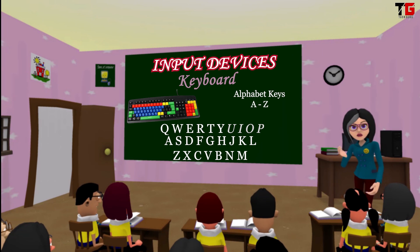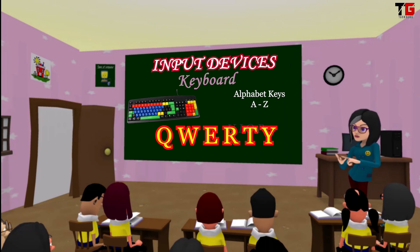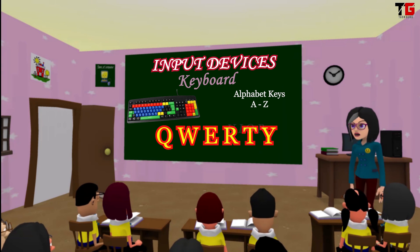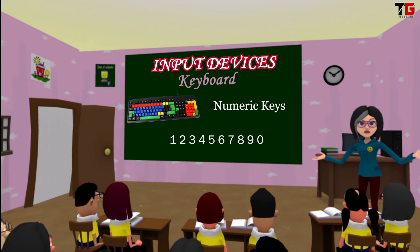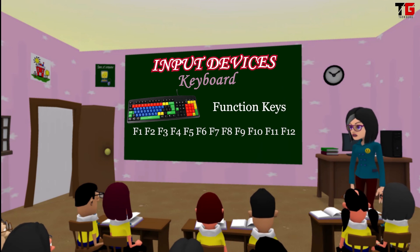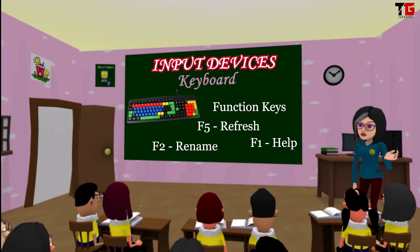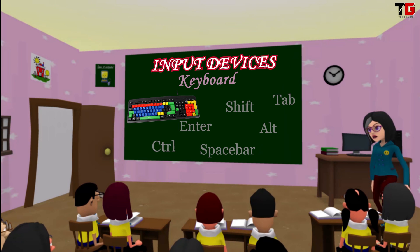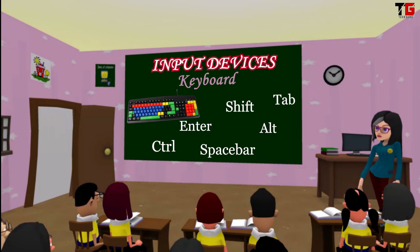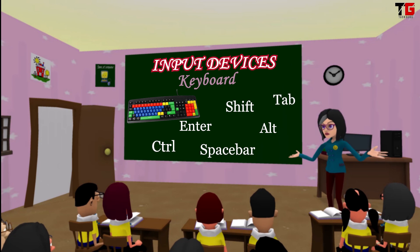It has 26 alphabet keys from A to Z. The first row has Q, W, E, R, T, Y, U, I, O, P. That's why these keyboards are also called QWERTY keyboards. Next, numeric keys — there are 0 to 9 numeric keys. Function keys — there are 12 function keys from F1 to F12 at the top of the keyboard, and each function key has a different job. Arrow keys — the computer also has 4 arrow keys. Next, other keys — there are so many other keys available on the keyboard like Alt, Control, Tab, Enter and Spacebar. All these keys have different functionalities.